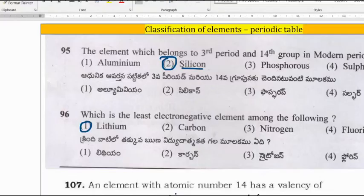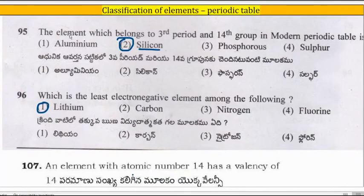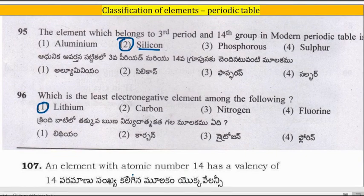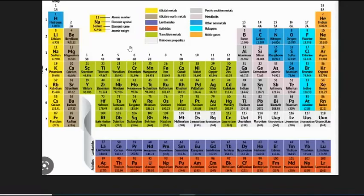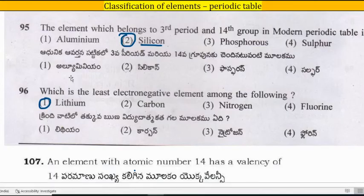Question: The element which belongs to the 3rd period and 14th group in the modern periodic table. The 3rd period, 14th group element is silicon. So the correct option is silicon.